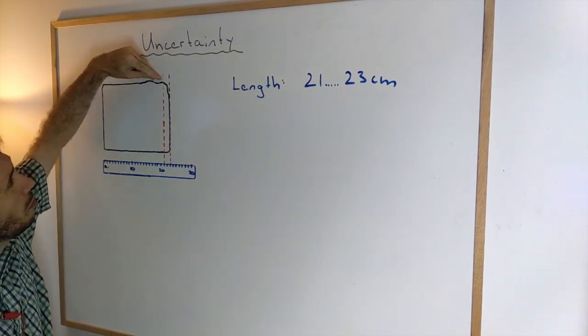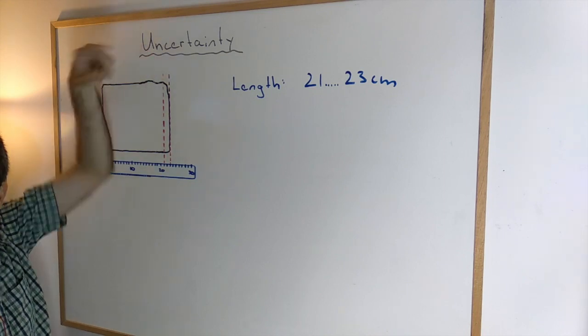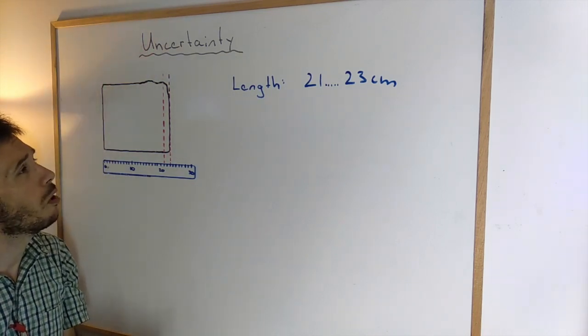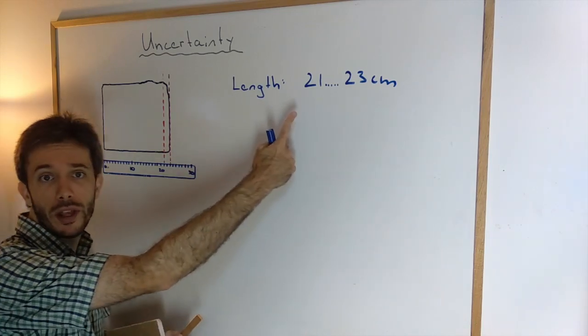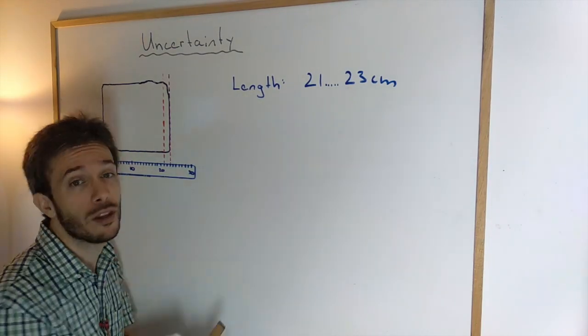So I could say, okay, this could be my minimal length, this could be the maximal length. So overall, my length with my ruler could be anything from 21 to 23 centimeters.